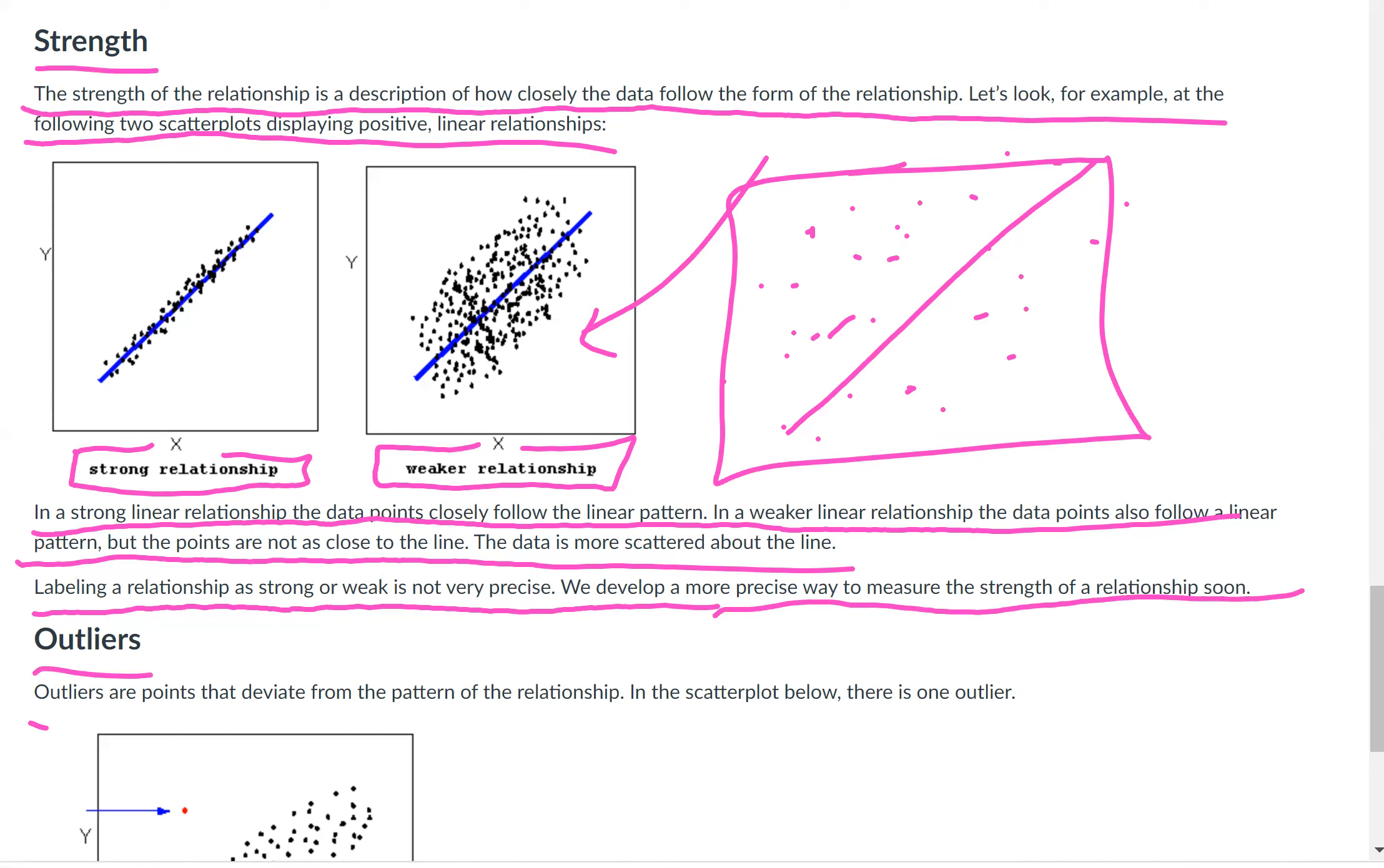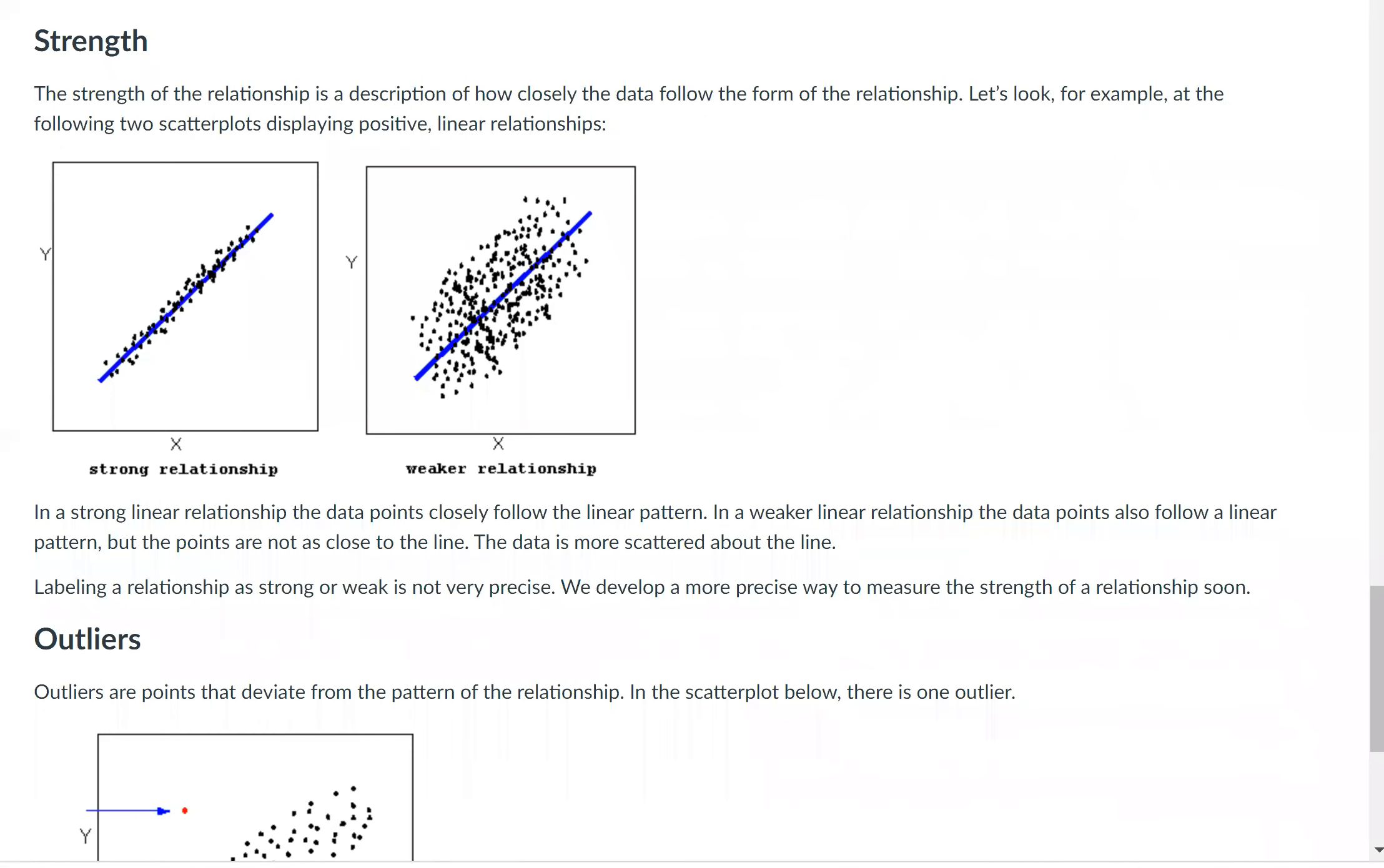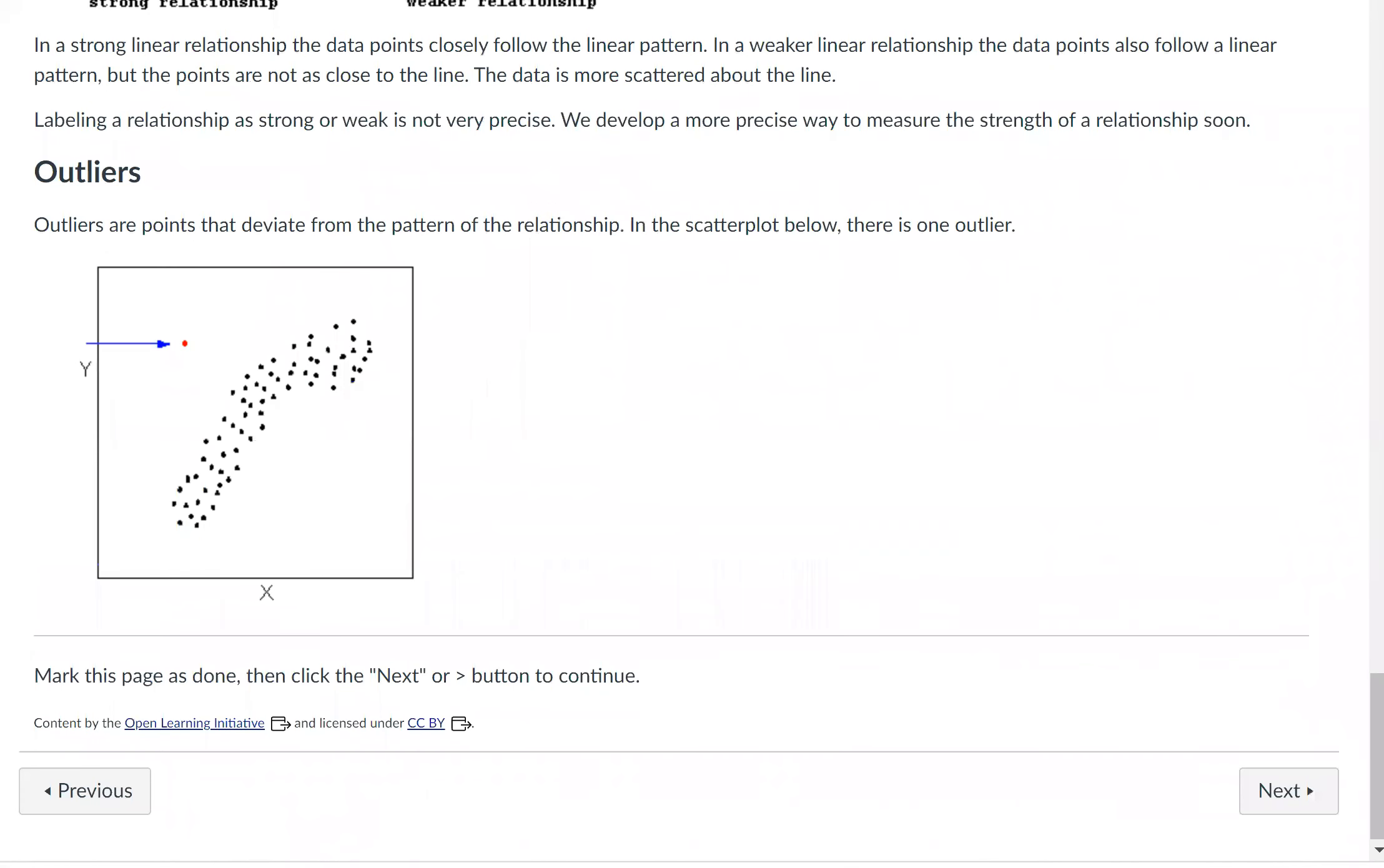Outliers. Outliers are points that deviate from the pattern in the relationship. In the scatter plot below, there's one outlier. Let's go look at that one. So you can kind of see it. It's in red, but usually you wouldn't put it in red. You just identify it with your eyes, but they'd all be the same color. Outliers are points that deviate from the pattern in a relationship. In this scatter plot below, there's one outlier. Sometimes there's more than one. Just depends on the situation.